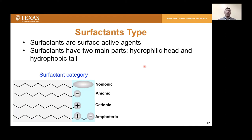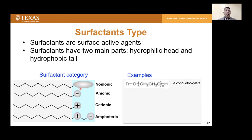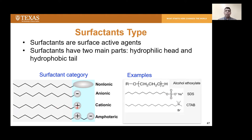Surfactants are surface active and have a hydrophilic head and hydrophobic tail. They are categorized into four main groups: non-ionic (such as alcohol ethoxylate, with a hydrophilic head having no charge and a carbon-carbon chain hydrophobic tail); anionic (negatively charged hydrophilic head, example sodium dodecyl sulfate, SDS); cationic (positive charge, example CTAB, which is C16 with an ammonium group); and amphoteric (having both positive and negative charge in the same molecule, such as lauryl betaine with both an ammonium and a carboxylate group).